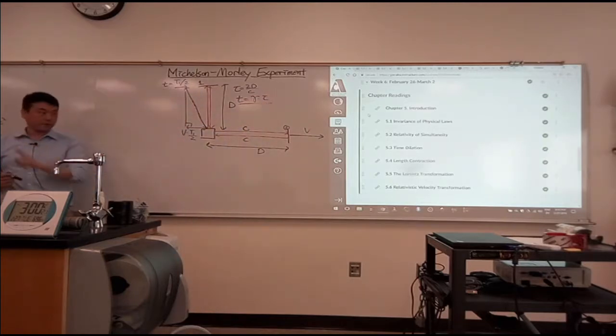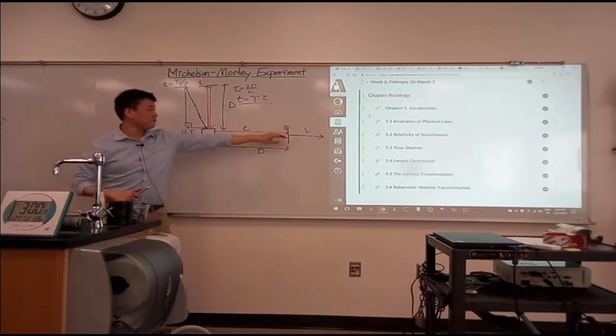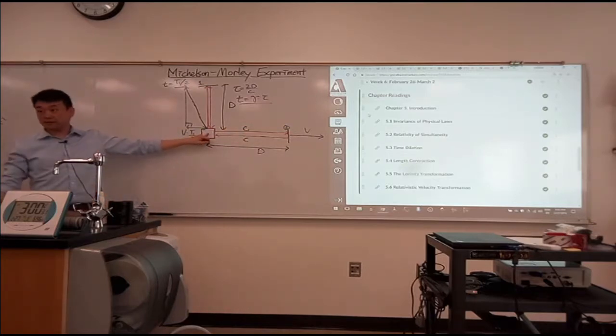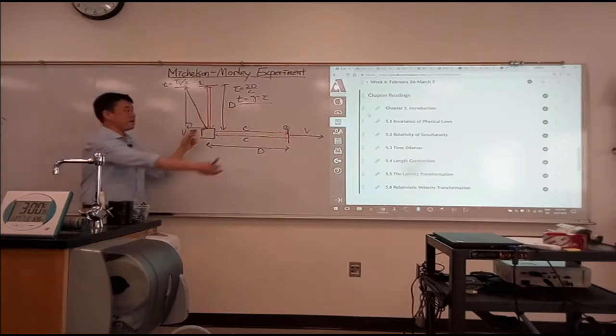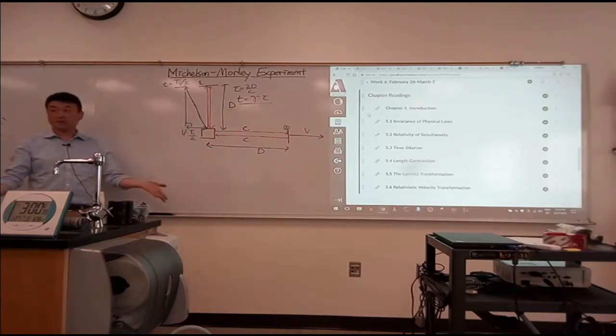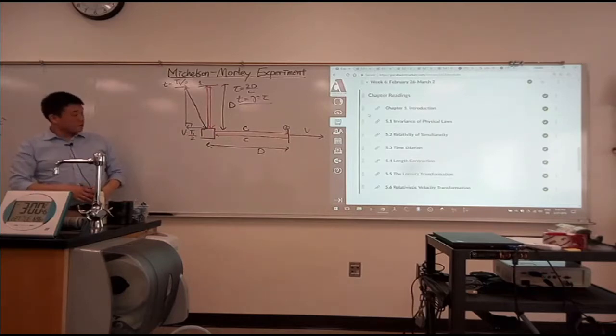Now, this is what I want to enforce. I want to enforce that the round trip time along this arm to take the same amount of time as this, so that when they come back and recombine here, then there shouldn't be any interference fringe because they all come back at the same time.